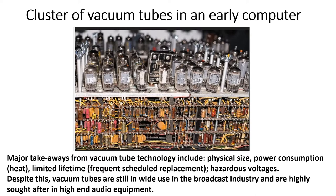Here is an early computer cluster of vacuum tubes. In addition to the tubes there are hundreds of accompanying resistors and a smaller number of capacitors — pretty complex and physically large. Takeaways from this type of computer included physical size, power consumption, heat produced by tubes, limited tube lifetime since they did burn out, and hazardous voltages often into the hundreds of volts. Despite this, vacuum tubes are still in wide use today, particularly in the broadcast industry for TV and radio transmitters, and are highly sought after in high-end audio equipment because they're extremely low in self-generated noise.